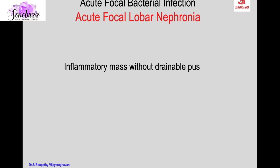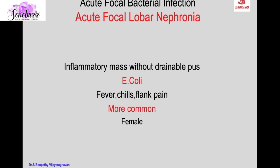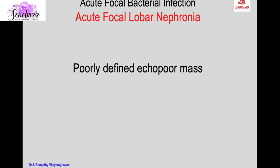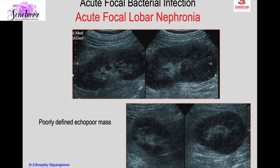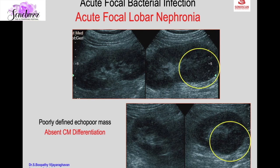Another form of acute bacterial infection is acute focal bacterial infection, also called acute focal lobar nephronia. It is an inflammatory mass without drainable pus, caused by E. coli. Patients present with fever, chills, flank pain, more common in females and diabetics. On ultrasound it appears as a poorly defined echo-poor mass with absent corticomedullary differentiation, associated with clinical features of fever and flank pain. Here the left kidney shows a poorly defined echo-poor mass in the lower pole with absent corticomedullary differentiation.